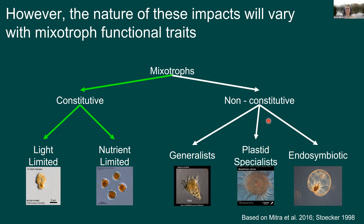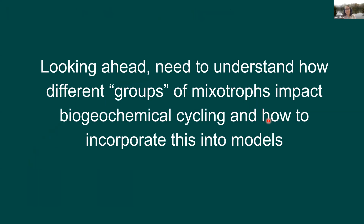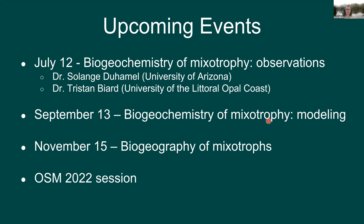Mixotrophs need to be treated as more than just a single group. Looking ahead, one of the big things of interest related to OCB is understanding how these different groups of mixotrophs impact biogeochemical cycling and then incorporating this into models. So how many groups of mixotrophs do we really need to consider when modeling? That's a quick overview of mixotrophs and the biogeochemistry interests related to OCB, and hopefully you'll stick around as I give more information directly related to events happening with our working group.